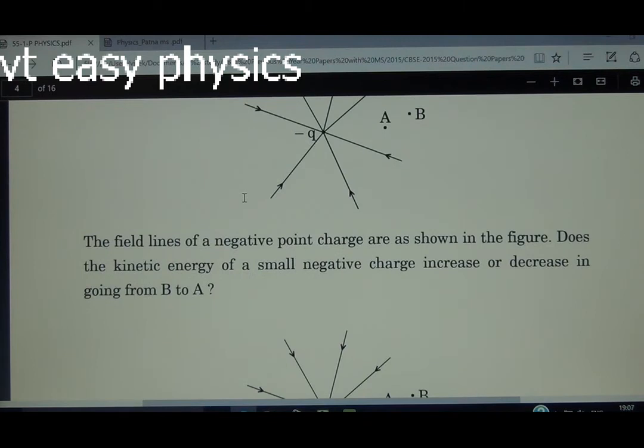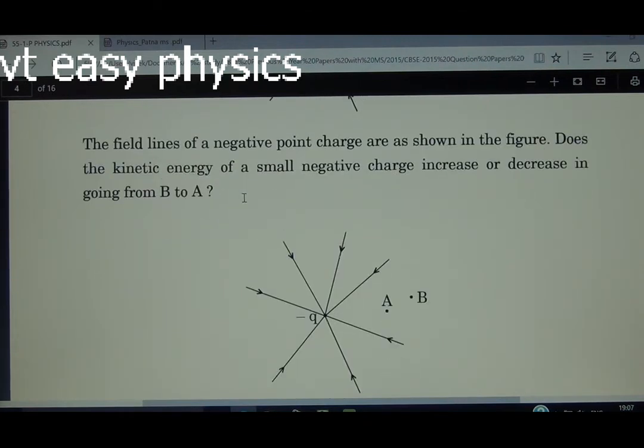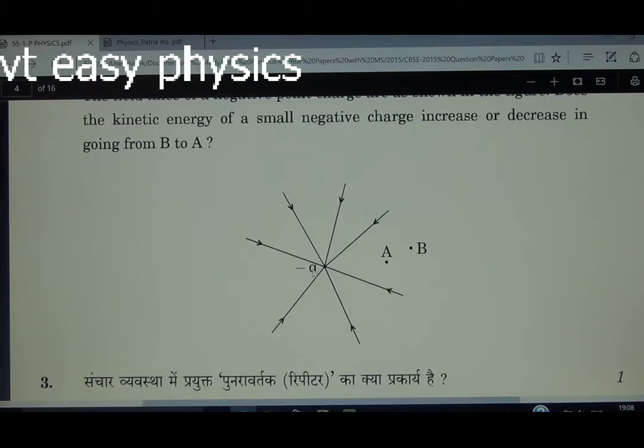Question number 2. The field lines of a negative point charge are as shown in the figure. Does the kinetic energy of a small negative charge increase or decrease in going from B to A? The same type of question is also asked but with positive charge at the center in Goati region. So we can predict potential energy.